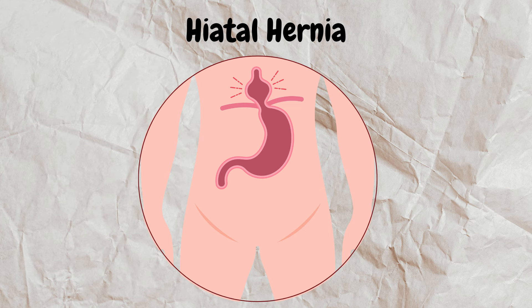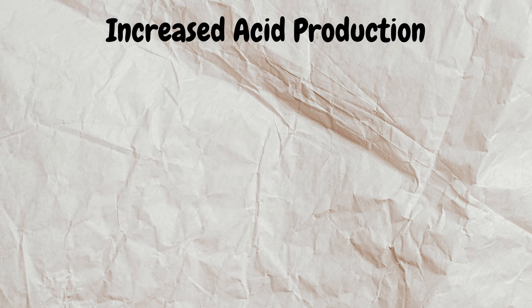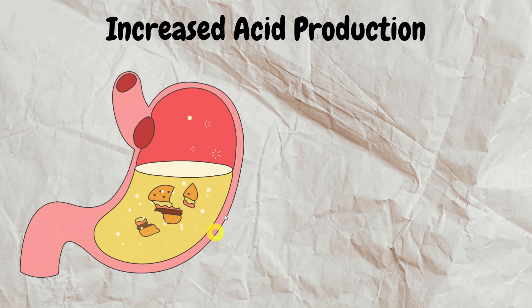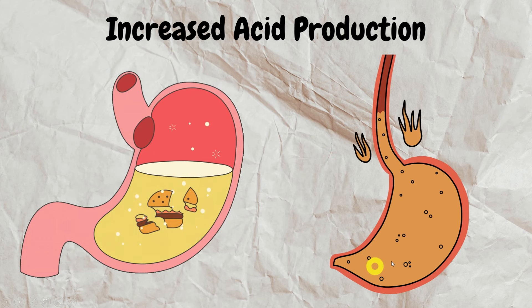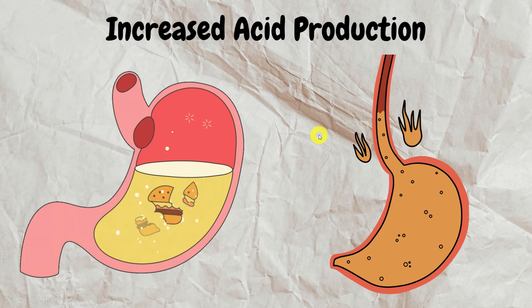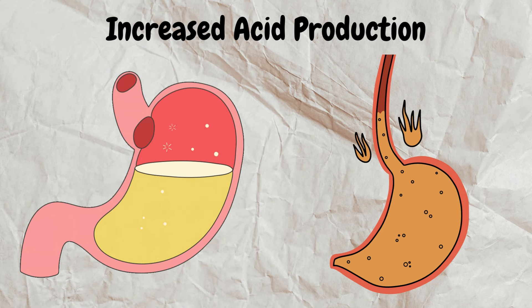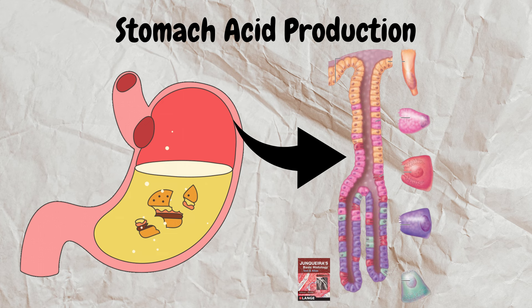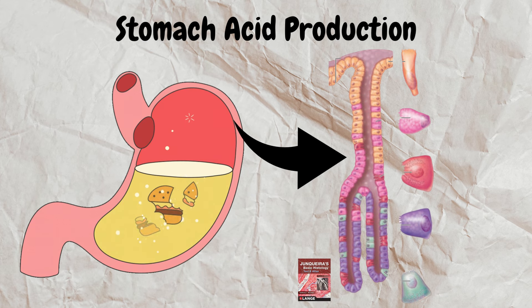The next cause is increased acid production. The stomach produces acid to break down food for easier digestion. If more acid is produced, it has more chances to flow back into the esophagus and lead to GERD. To understand this, we look at the normal parietal cell and the lining epithelium of the stomach, as shown here — a figure from Junqueira's Basic Histology, 15th edition. We can see the covering epithelium above and glandular epithelium below.